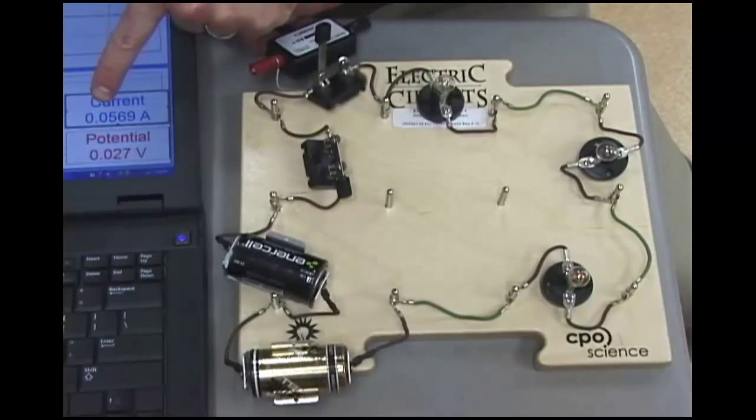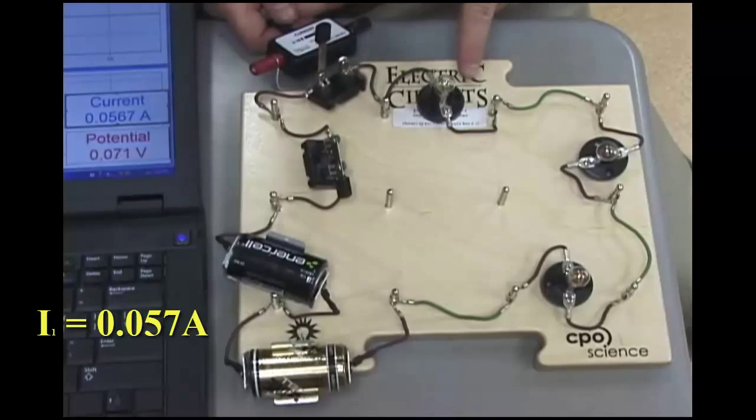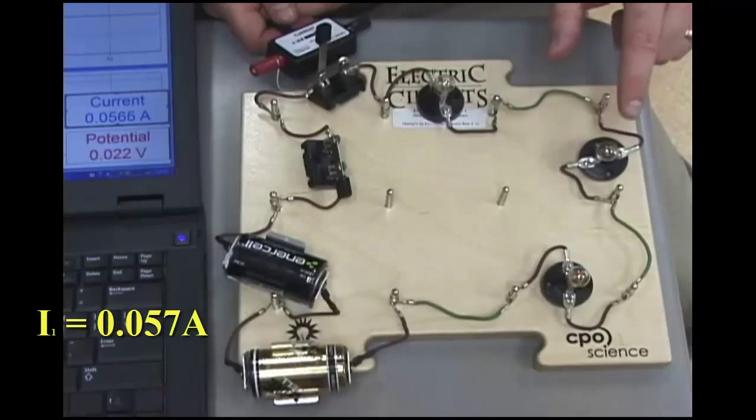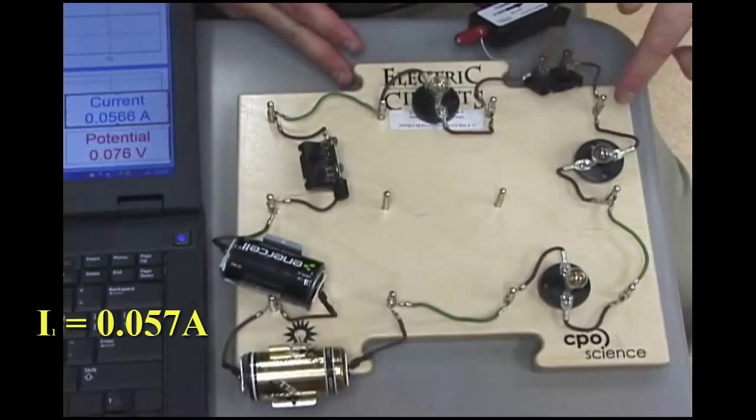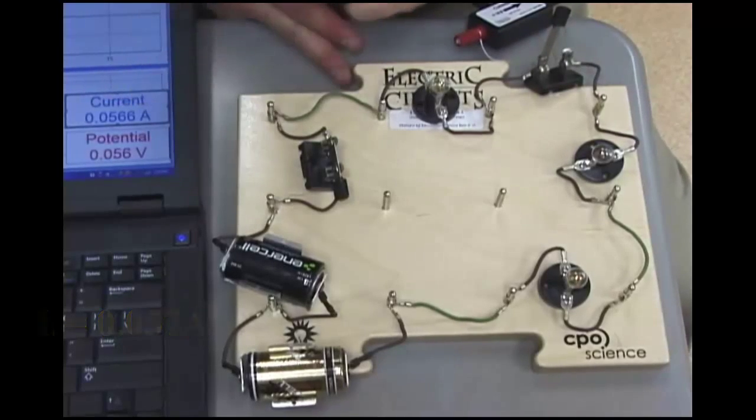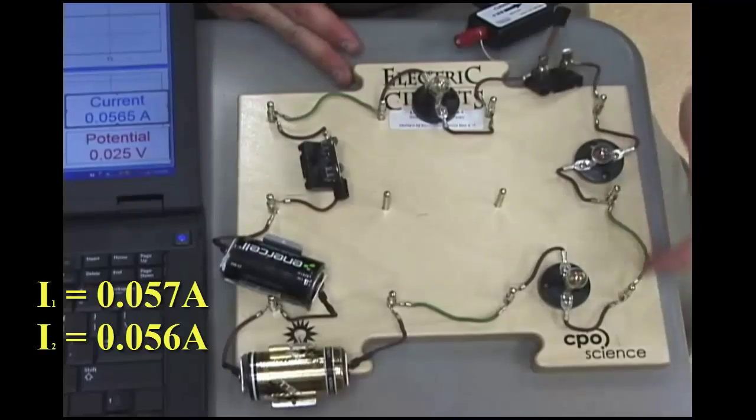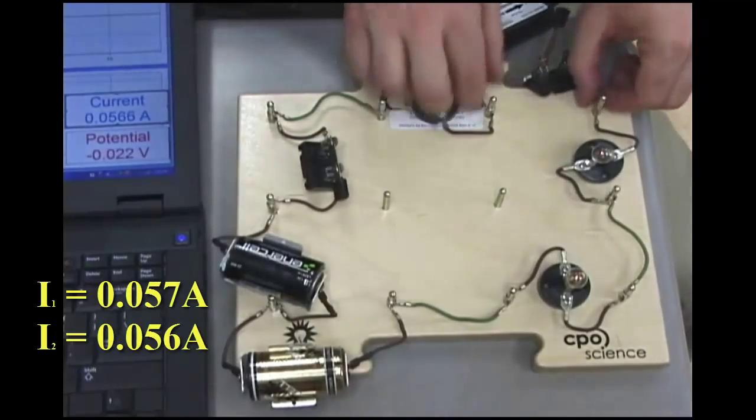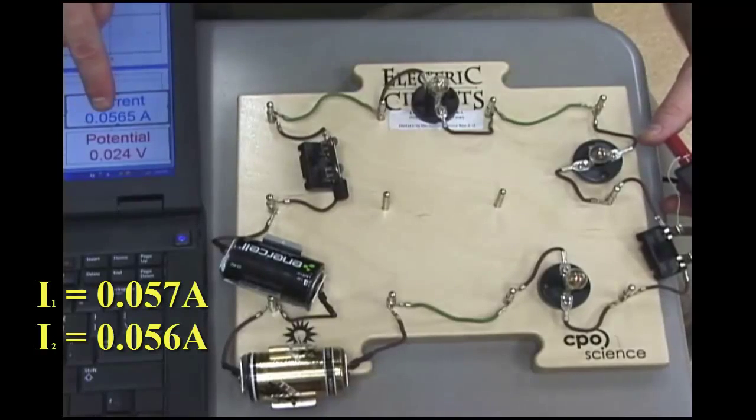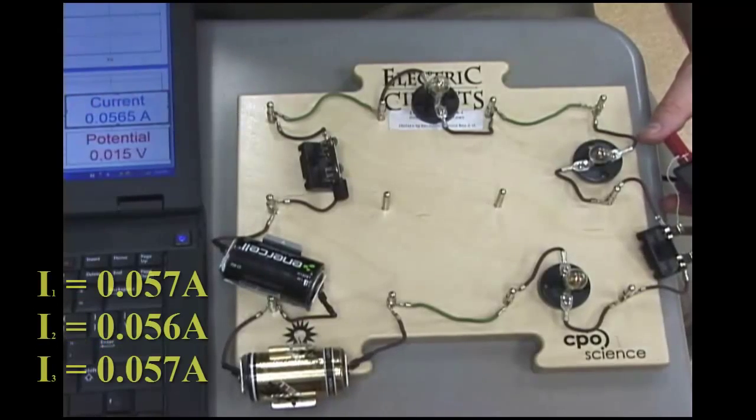And so, you'll notice the current is 0.057 amps at light bulb 1. But what happens when I move my amp meter to here so I find out the current going into light bulb number 2? The current going into light bulb number 2 is 0.056 amps. What about the current going into light bulb 3? The current going into light bulb 3 is 0.057 amps.